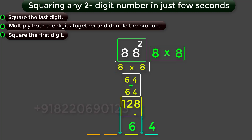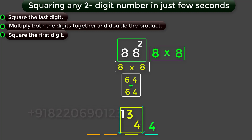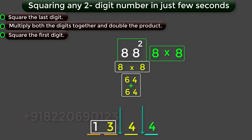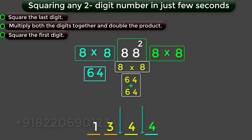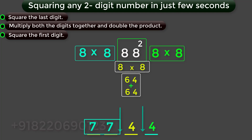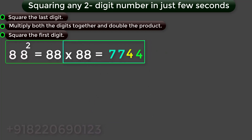Now, add this 128 to the digit 6, you will get 134. In this 134, the 4 becomes the middle part of the answer, and the 13 moves to the first part of the answer. Next, find the square for the first digit 8, you will get 64. Add this 64 to the number 13, you will get 77. Now, combine all these digits together, you will get the number 7744, which is the square of 88.